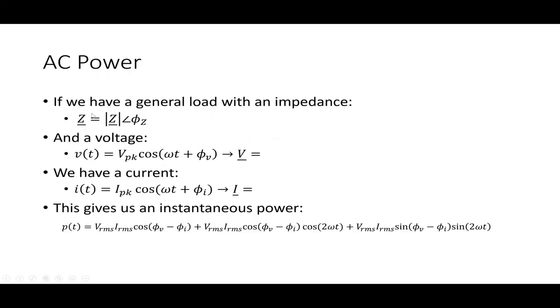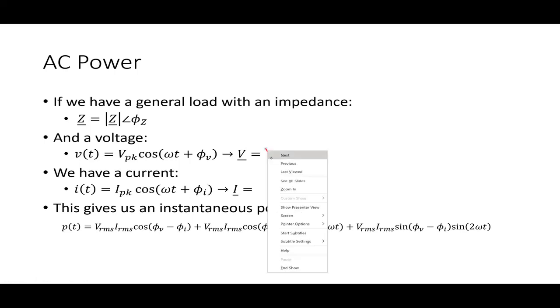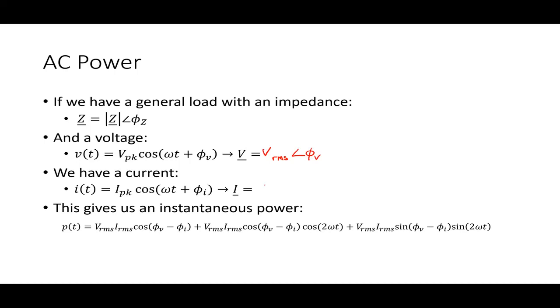We're going to talk about an important concept that applies in single-phase AC systems, which we call complex power. So if I have a general impedance that has a magnitude Z with an angle phi sub Z, and a voltage and current given in the time domain, I'm now going to write all of my phasors in terms of RMS. So this is V RMS with an angle phi V and I RMS with an angle phi sub I. Recall that I peak over square root of two equals I RMS, and similarly for the voltage. We're going to write our phasors that way from now on.